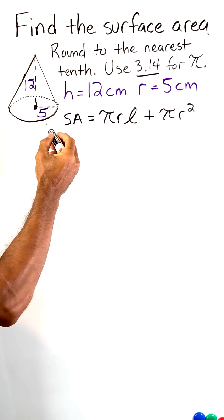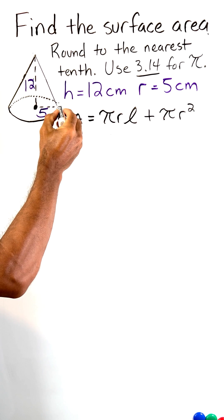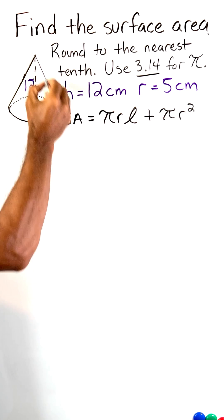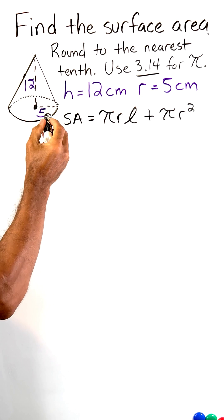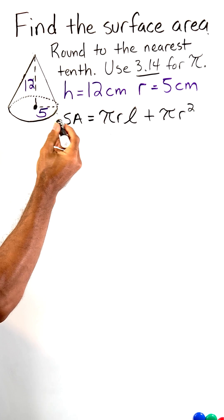So we have to use the Pythagorean theorem to determine what this hypotenuse is, because as we can see here, we have a right triangle. The radius is one of the legs and the height of the cone is another leg. So let's start by figuring out what the slant height is.